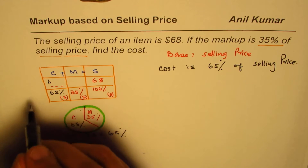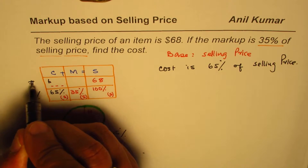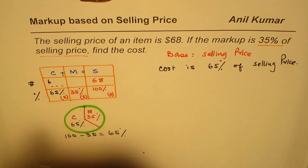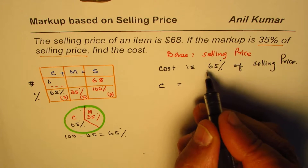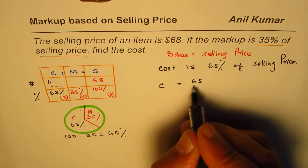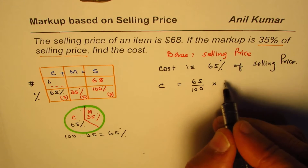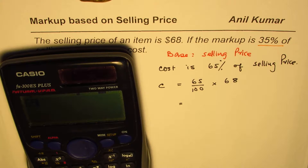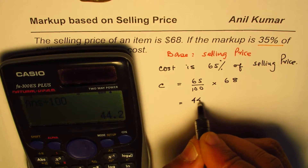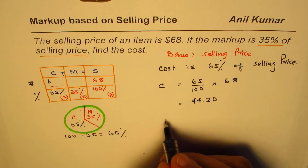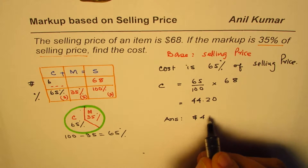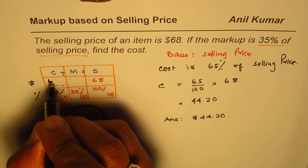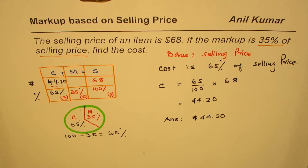That's the beauty of this table — we have the percent column and can find the number using it. So cost equals 65%, or 0.65 in decimals, times the selling price of $68. That gives us 65 × 68 ÷ 100 = $44.20. So the cost price is $44.20.